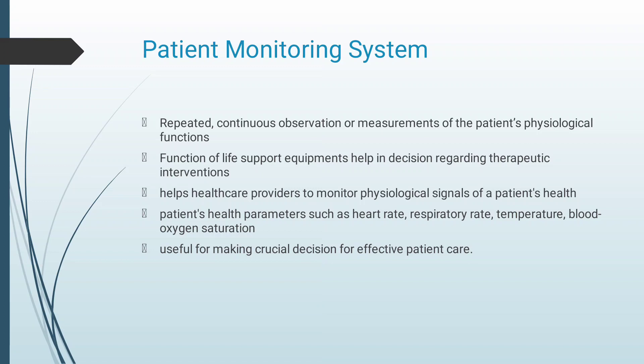Introduction: A patient monitoring system is a repeated continuous observation or measurement of the patient's physiological functions. It is the function of life support equipment that helps in decisions regarding therapeutic interventions. It helps healthcare providers to monitor physiological signals of a patient's health, including parameters such as heart rate, respiratory rate, temperature, blood oxygen saturation level, and so on.